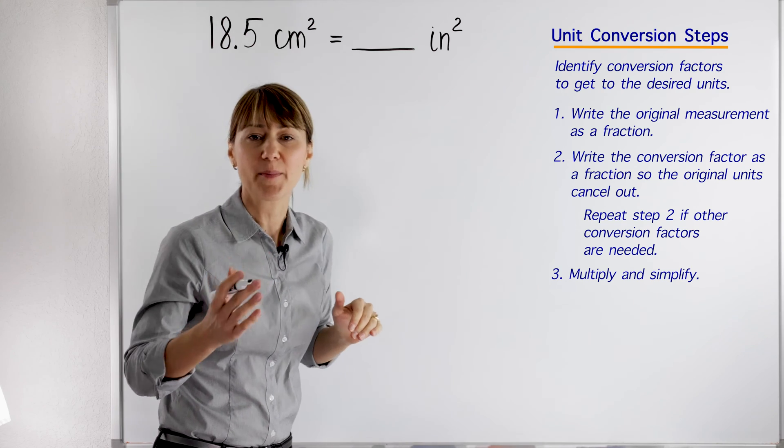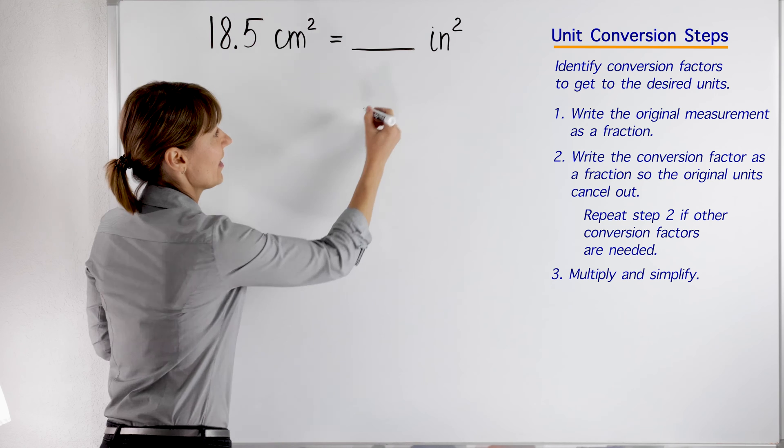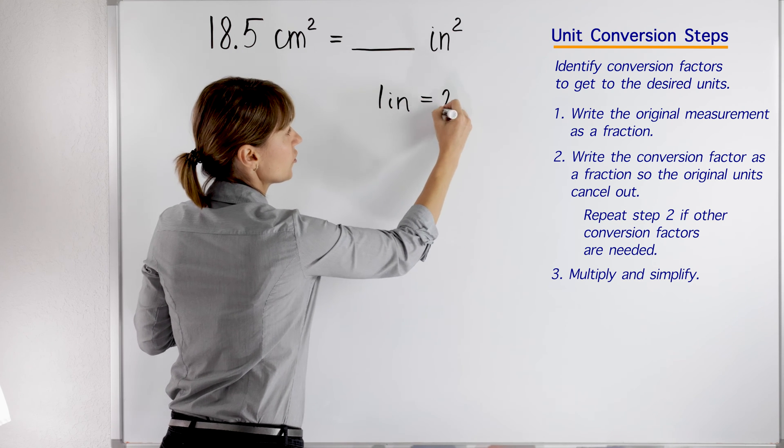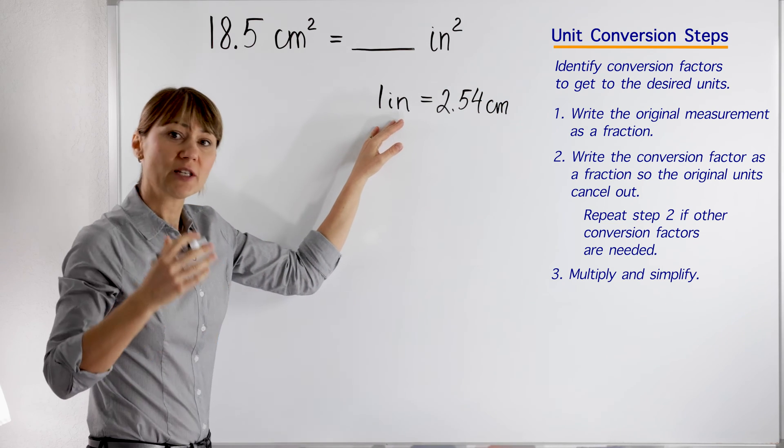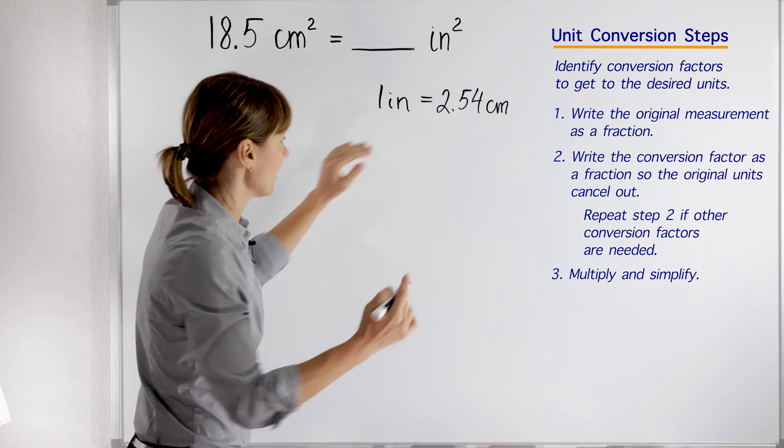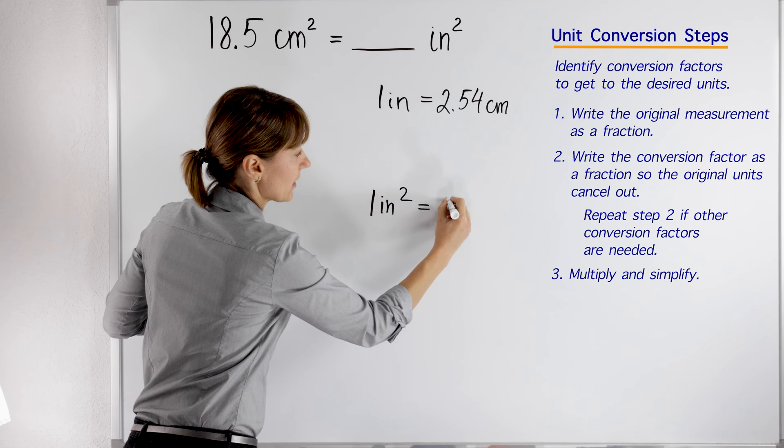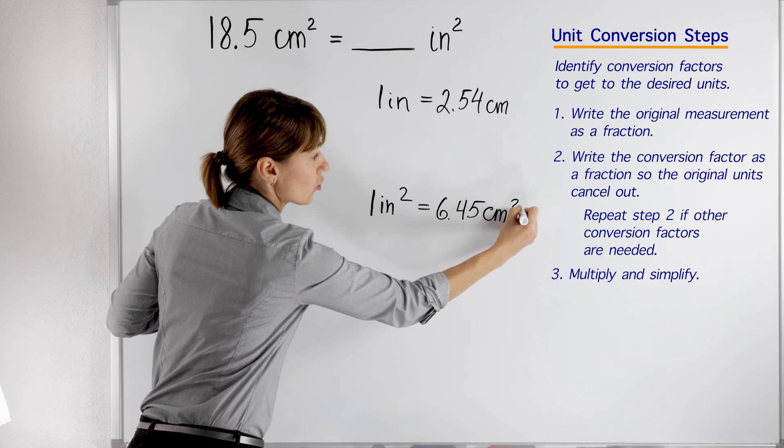If you pick up any conversion table or chart, you may find that 1 inch equals 2.54 cm. Your conversion table may have another conversion factor like this: 1 inch² equals 6.45 cm².